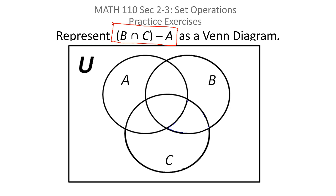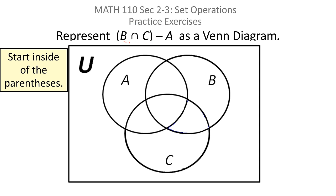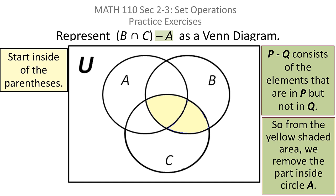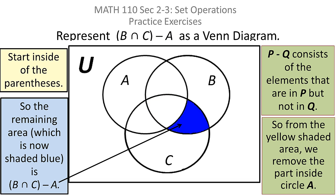Represent this expression — the intersection of B and C minus A — as a Venn diagram. This is just testing to see if you understand these concepts. Start on the inside of the parenthesis and sketch out what B intersect C is: those are the things that are in both circle B and circle C, represented by the yellow area. Then take away from that yellow area anything that's in circle A. The remaining area is the visual representation of the intersection of B and C minus A.